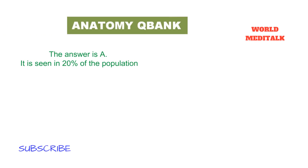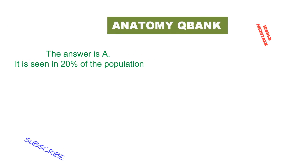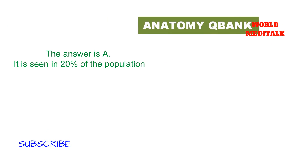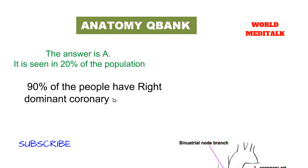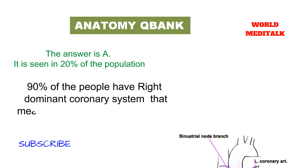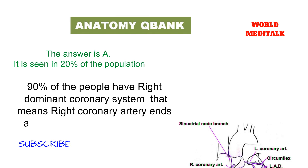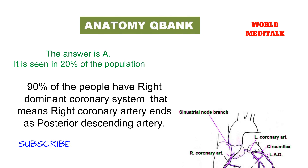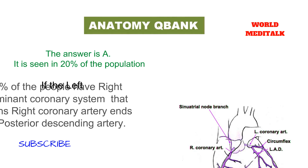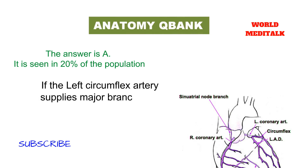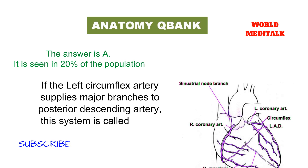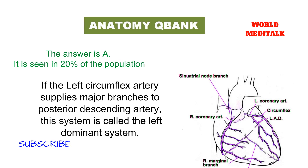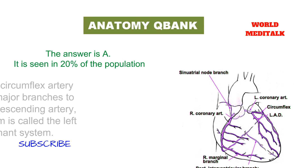The answer is option A: 'It is seen in 20% of the population.' This statement is NOT true, because 90% of people have a right dominant coronary system, meaning the right coronary artery ends as the posterior descending artery. If the left circumflex artery supplies major branches to the posterior descending artery, that system is called the left dominant system.